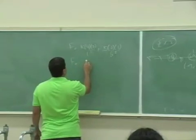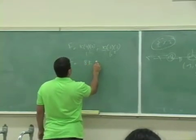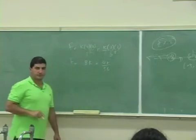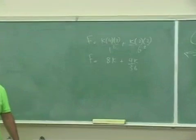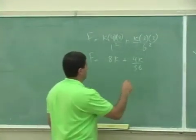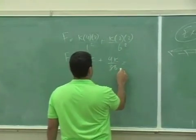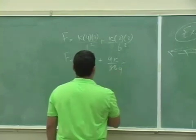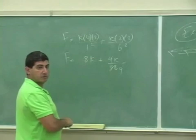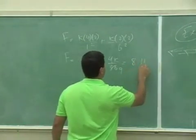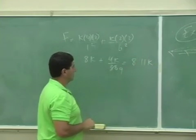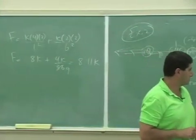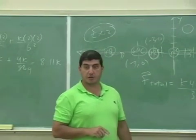So what would that be? Right, like that, 8 and 1 9th, right? 8 and 1 9th, which is 8.11 k, 8.11 k. That's much bigger, huh?